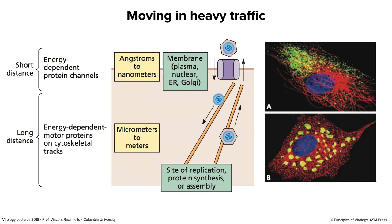Let's talk about transport. Remember the cell is crowded; things do not diffuse freely. They move by active transport processes. Long-distance movement requires energy — motor proteins on cytoskeletal tracks are required during both entry and exit. If a virus particle forms in the nucleus, it's not going to diffuse to the plasma membrane; it moves along motor pathways, just as during entry. Here is an experiment with vesicular stomatitis virus to illustrate this.